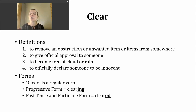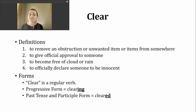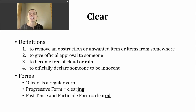Clear is a regular verb. To make the progressive tense, all I need to do is add -ing to form "clearing." The past tense and participle forms of this verb are made by adding -ed. And because this verb ends in a voiced consonant sound, the -ed is going to make a D sound: "cleared."